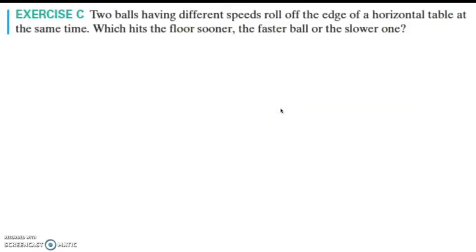Exercise C: Two balls having different speeds roll off the edge of a horizontal table at the same time. Which hits the floor sooner — the faster ball or the slower ball?